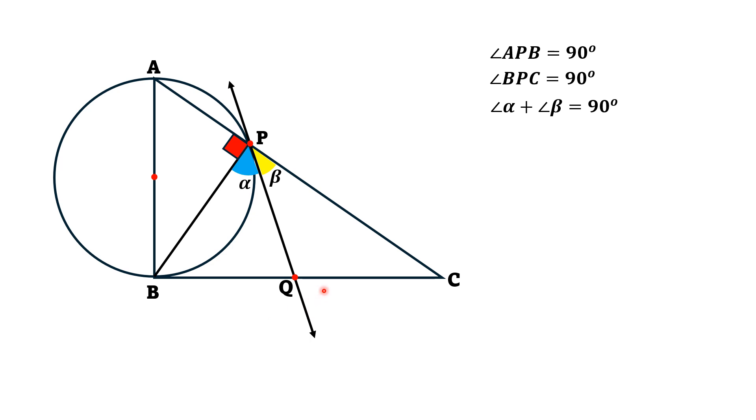Now, we have a circle theorem. If we have a point outside the circle and two tangents are drawn from that point to the circle, then the lengths of these tangents are always equal. So, here Q is the exterior point and we have drawn two tangents, QP and QB. Therefore, the lengths QP and QB are the same.